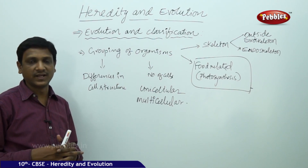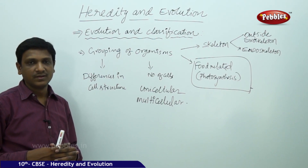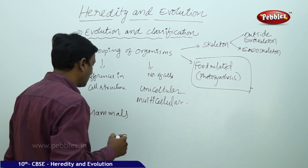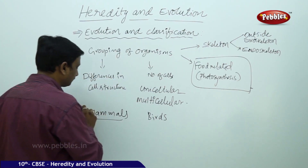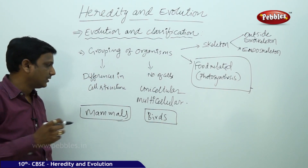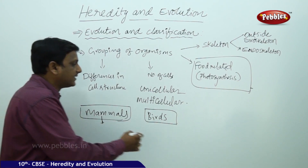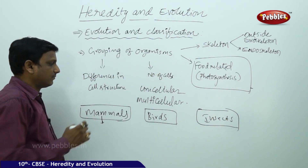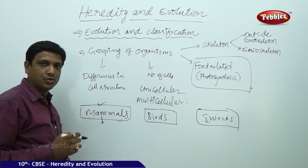Once you study the grouping of organisms, you can understand the relations and similarities between different groups, and by that understand how closely related they are. For example, take mammals and birds. You can find some similarities between them, but these two groups are entirely different from insects. Mammals give birth to live young ones — dogs, cats, humans. Birds include pigeons, parrots, and crows.